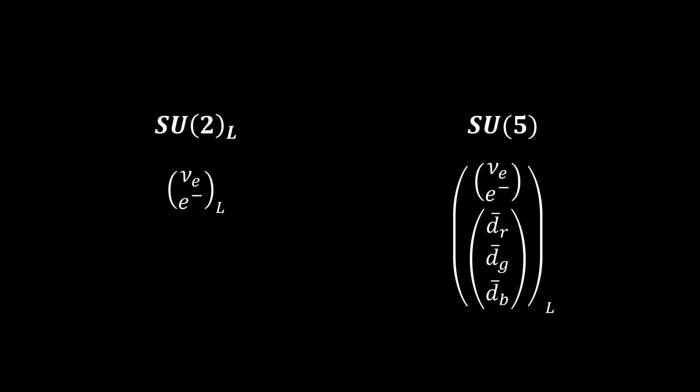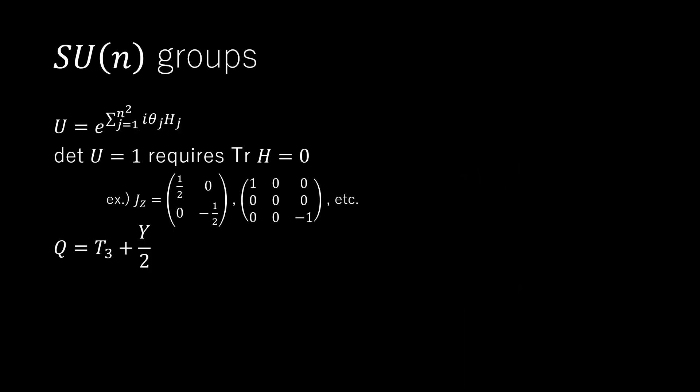Simply by considering this representation, we can find several surprising and very interesting results. The generators of SU-n transformations are traceless. Imagine that the generators are represented by matrices. Diagonal generators have their eigenvalues as the diagonal elements, so their trace is just the sum of their eigenvalues, which must consequently be zero.